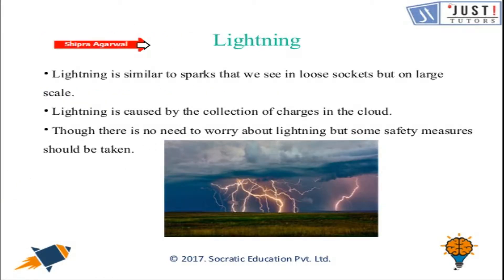The first topic is lightning. Lightning occurs while we are having a rainy day in the surrounding. It is similar to the spark that we see in loose sockets, but on a large scale. Lightning is a kind of electric spark that happens on a large scale in the sky. It is observed as a bright streak of light under a thunderstorm, and it is always accompanied by the sound of thunder.